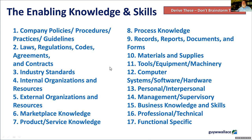We then use that data to systematically derive the enabling knowledge and skills. We ask the experts: what company policies, procedures, practices, and guidelines do you need to comply with? What laws, regulations, codes, agreements, and contracts? What industry standards? What internal or external organizations? I systematically tease out all of the enabling knowledge and skills based on this understanding of both ideal performance and gap performance. What we're often trying to do is elicit the non-conscious knowledge — the automated, tacit knowledge that people don't readily know, because they've automated so much of how they do their jobs.